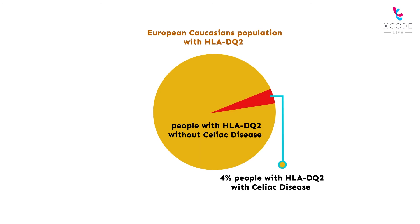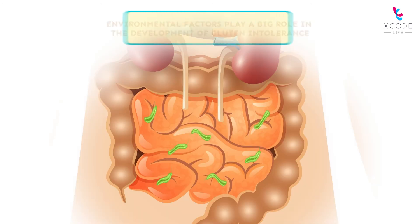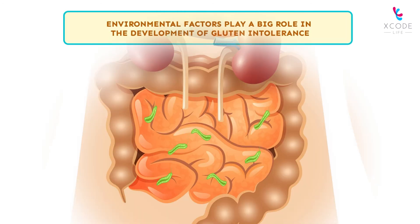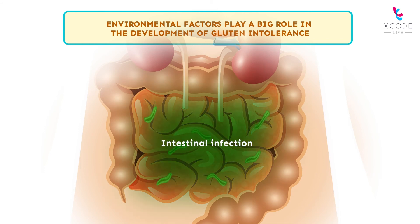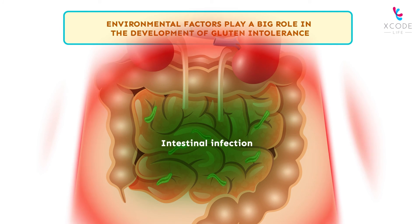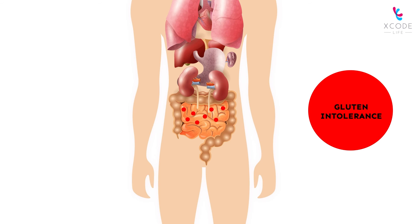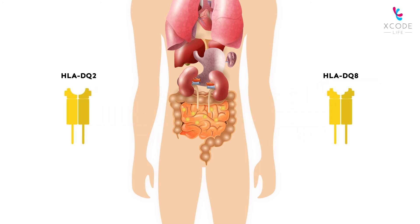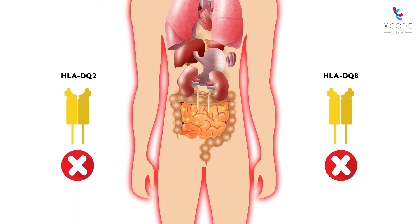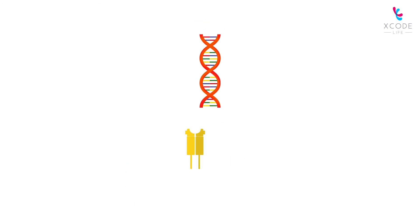This is because genetic differences are not the only contributors to gluten intolerance — certain environmental factors play a big role as well. Having an intestinal infection can result in immune cell activation to fight it off, so when such a person consumes gluten, the immune system will react to it, leading to gluten intolerance. So just the presence of HLA-DQ2 or HLA-DQ8 may not result in gluten intolerance, however it can significantly increase your risk.